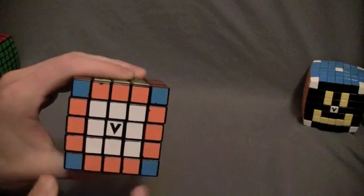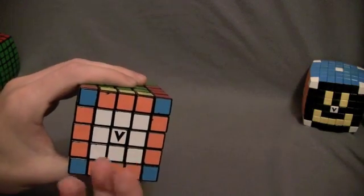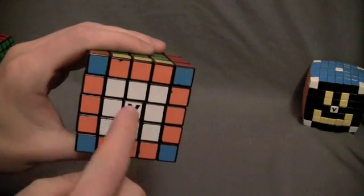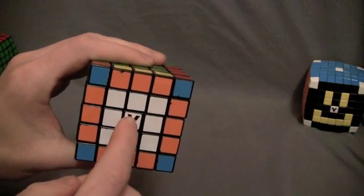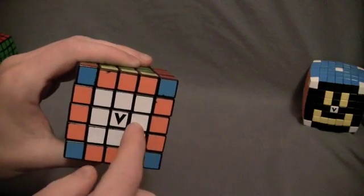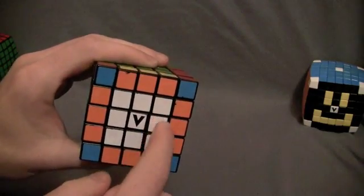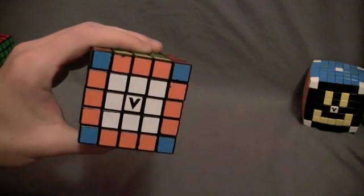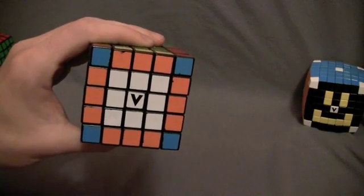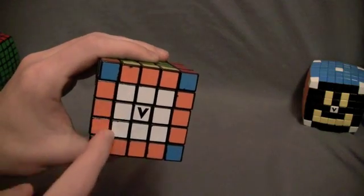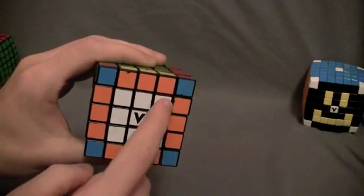For the centers, there are three different types of a center. There's the middle center, or just the center. And then there's the center edge pieces, which are right here, here, here, and here. Then there's the corner center pieces, which are here, here, here, and here.